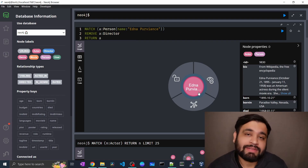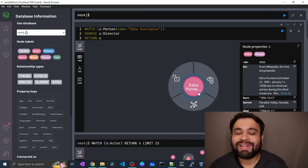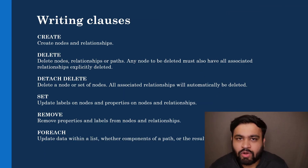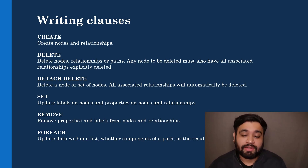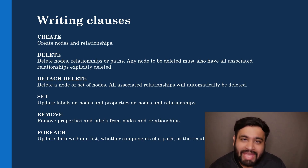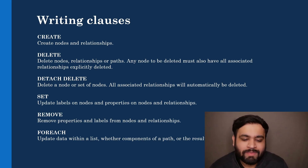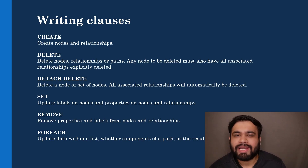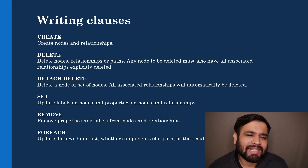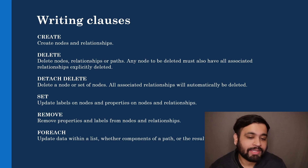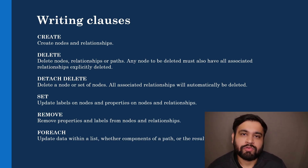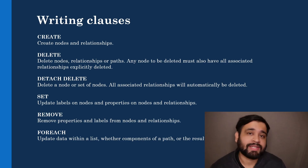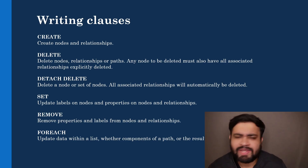There is also a FOREACH clause, which updates data within a list — whether components of a path or results of an aggregation. This is part of complex Cypher and we won't be using FOREACH very often for basic operations. For easy manipulation, reading, and writing, the clauses we've learned are sufficient. In the next lecture let's talk about more complex clauses like FOREACH, WHERE conditions, pattern matching, mathematical functions, and aggregation functions.